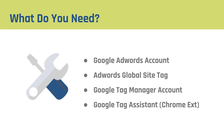So the big things that you need to know — what do you need to put this in place? First, you have to have a Google AdWords account. Second, you need to generate your global site tag, which I'll show you how to do here in a second. Then you need to have a Google Tag Manager account to put this on your site. We're huge proponents at AdSkills of using GTM because it makes your life so much easier. And then finally, having the Google Tag Assistant Chrome extension will help you make sure that your tag is firing and working correctly.